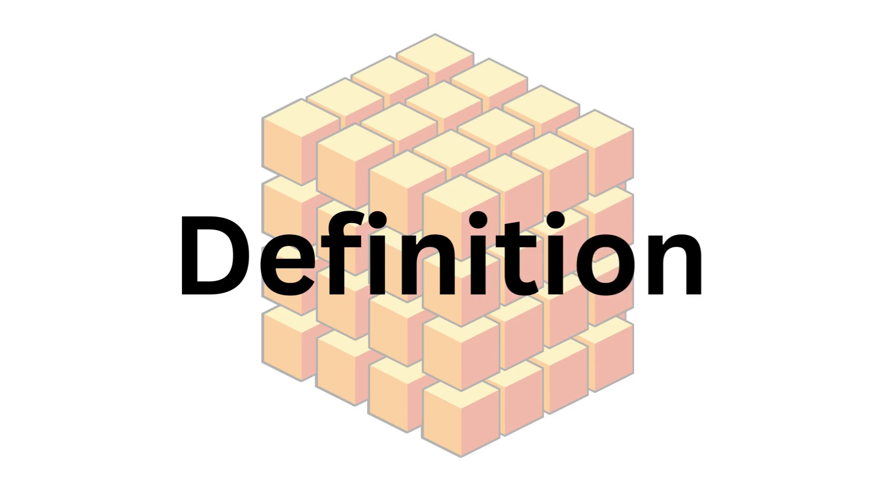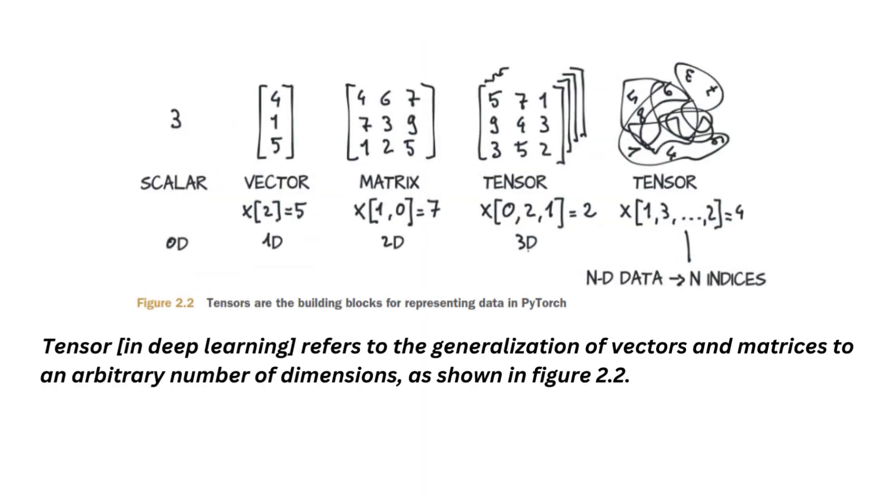Okay, first off, let's define tensor formally in the deep learning context. Tensors in deep learning refer to the generalization of vectors and matrices to an arbitrary number of dimensions. Another name for the same concept is multi-dimensional arrays.